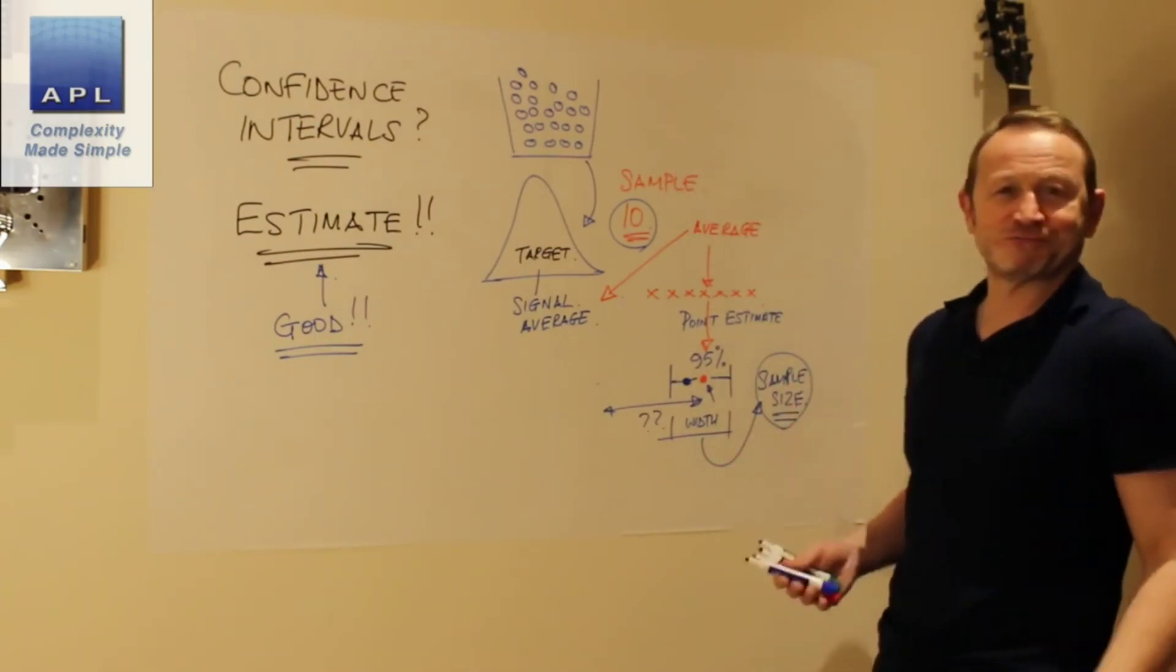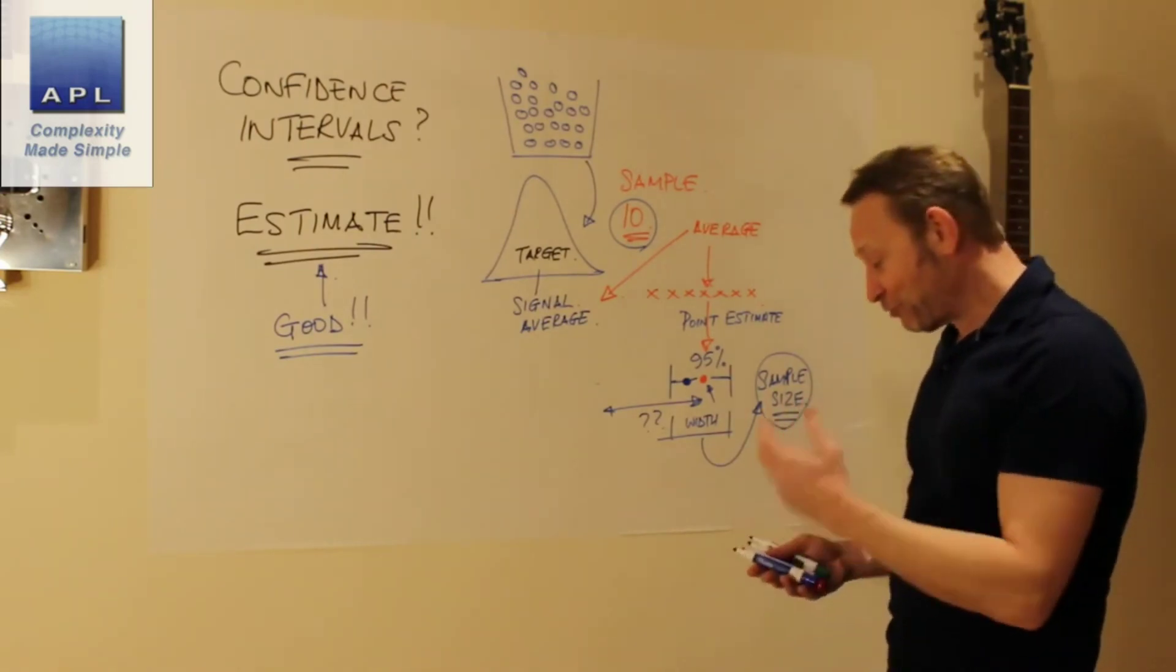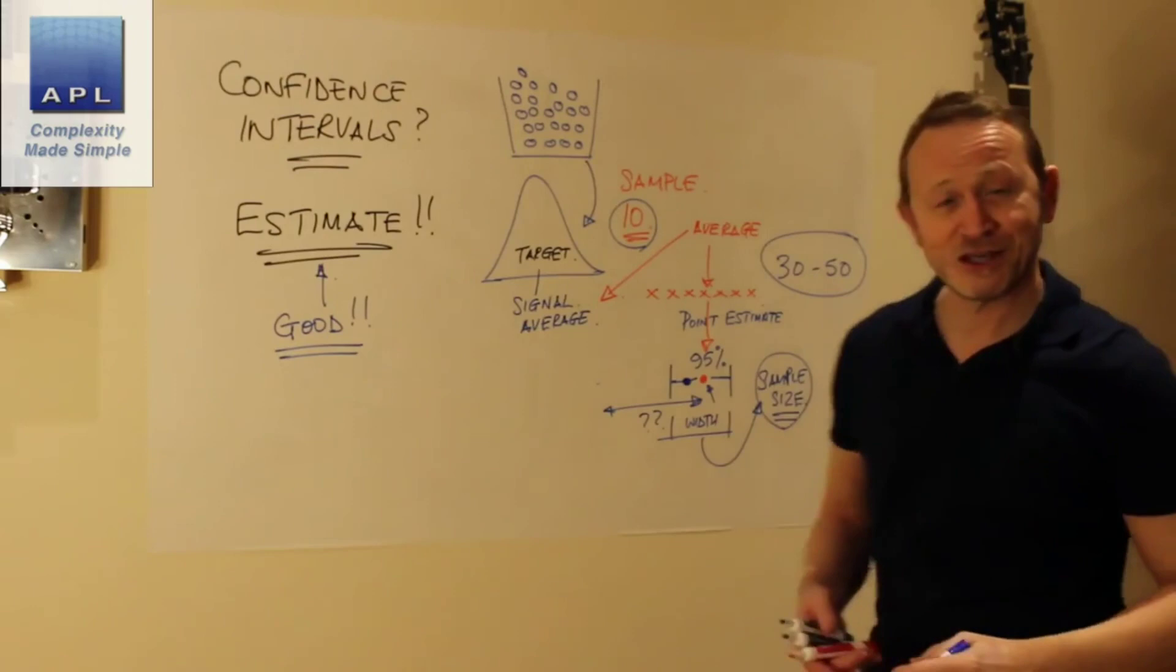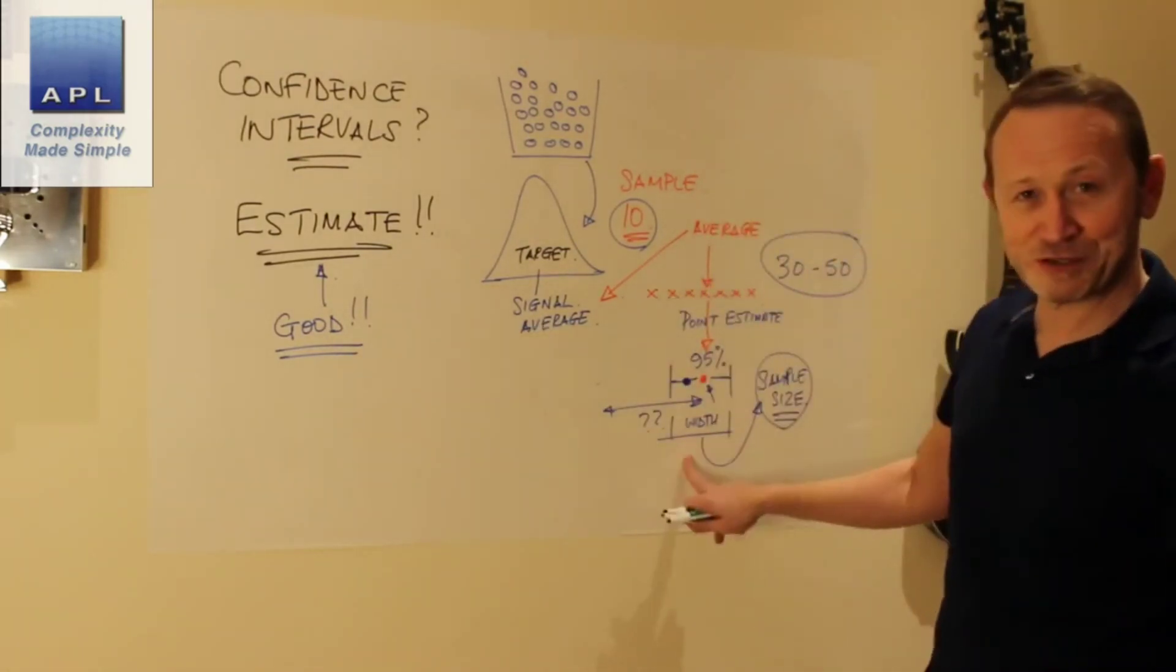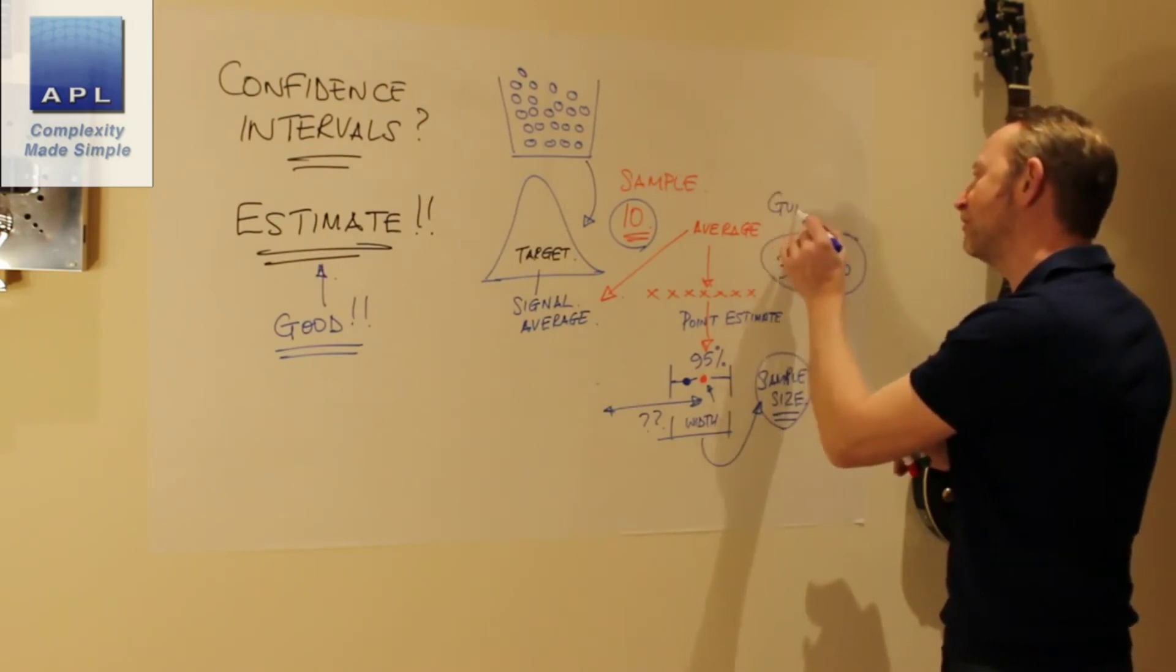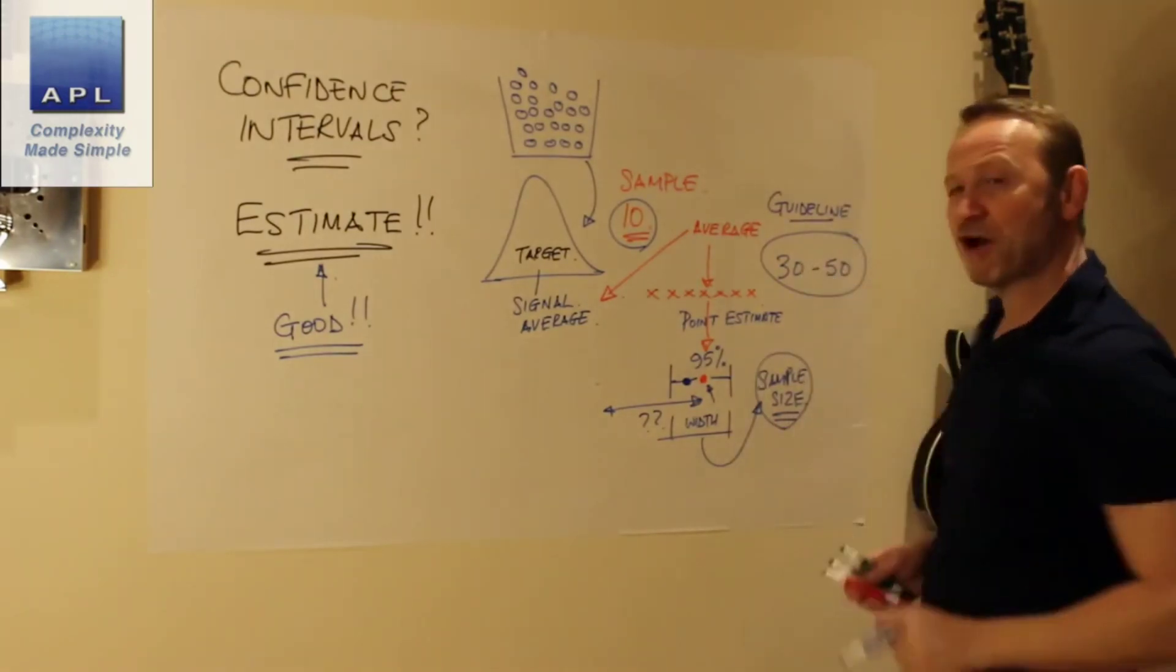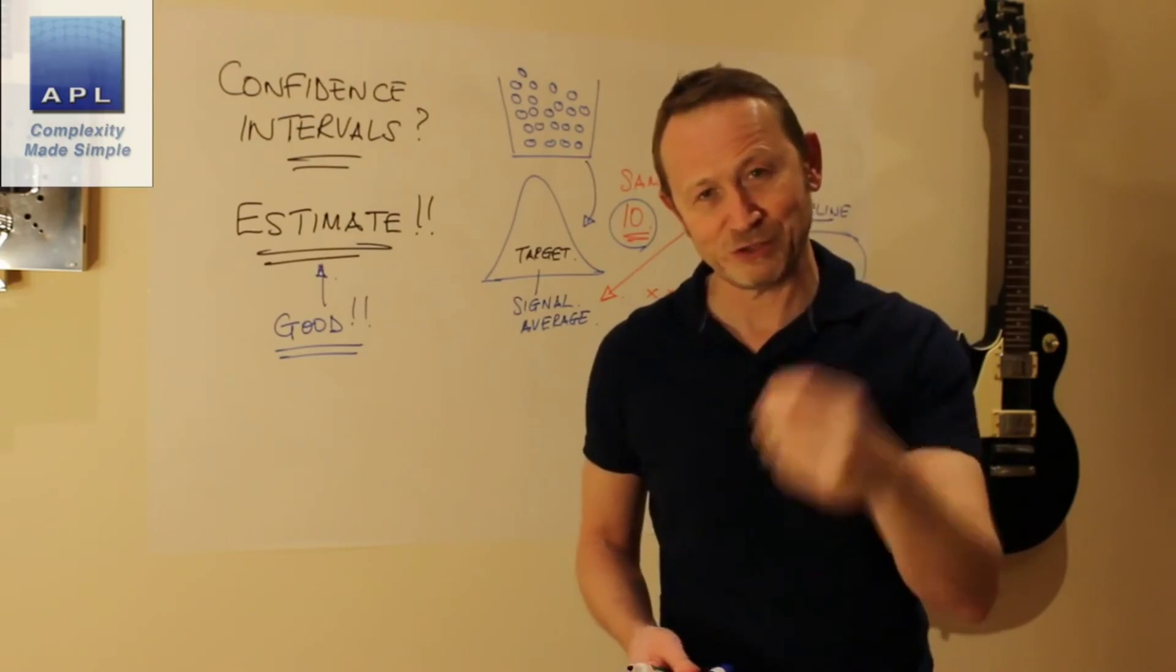And of course that tells you the sample size. Now where does that typically come out? Well, if you're measuring variable data, it nearly always comes out in the region of 30 to 50. So if you ask me, Paul, how often do you do this calculation - specify the width, do the maths, calculate the sample size - I rarely do it. I tend to use a simple guideline, which is that if I've got measurable data, I'm going to take a sample size somewhere between 30 to 50.